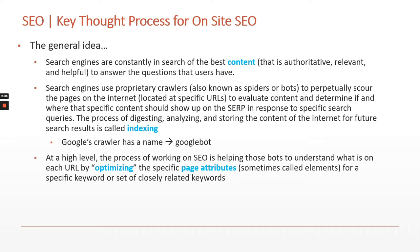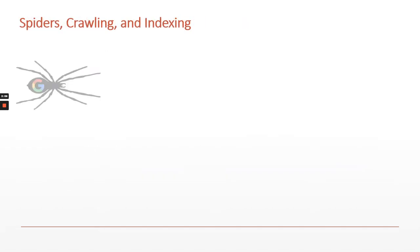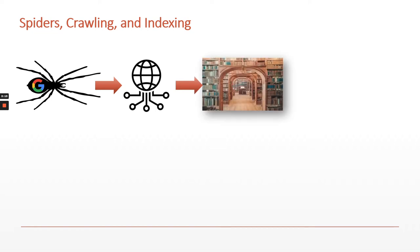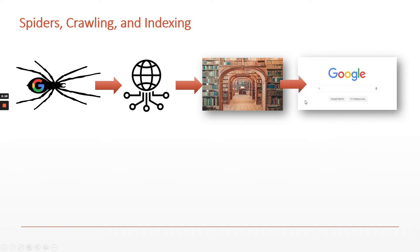We're going to talk about those things at another time, but for now it's just important to know that we need to know what they are and we need to optimize them. Here's what that looks like in practice: here's our spider going out across the interwebs, adding things into its library — its index — so that it is available to show when people search for things.